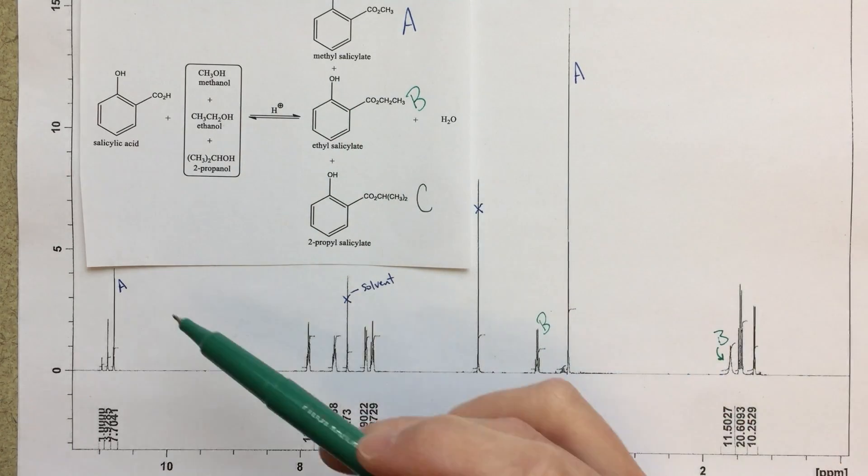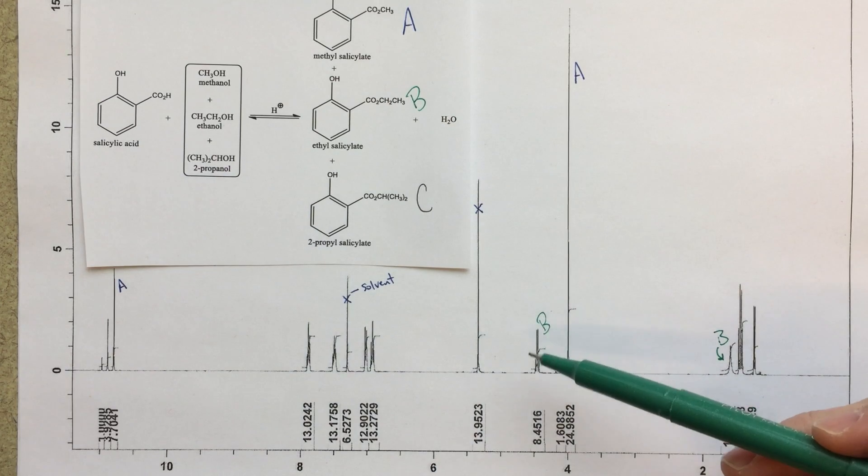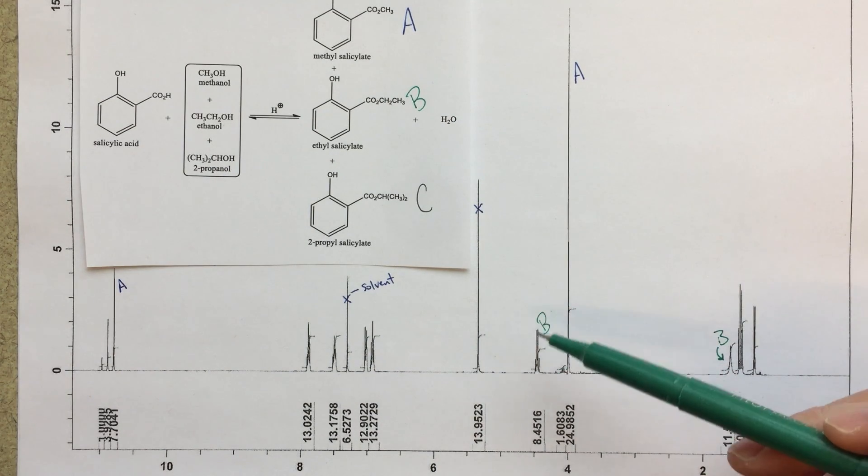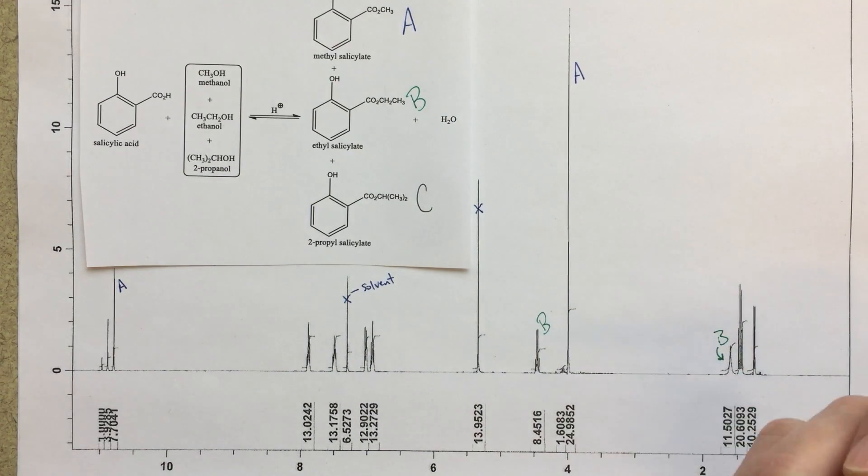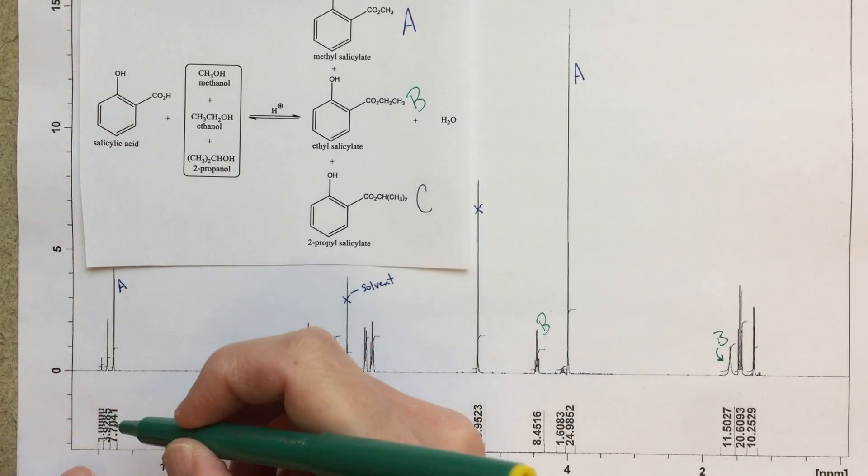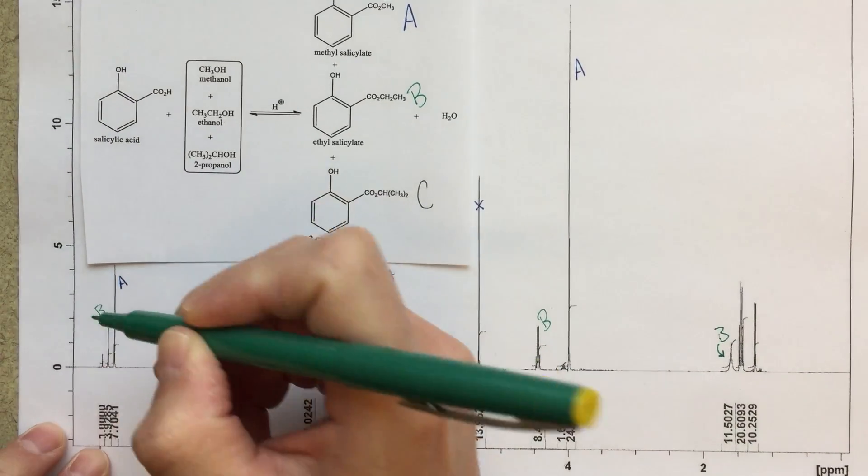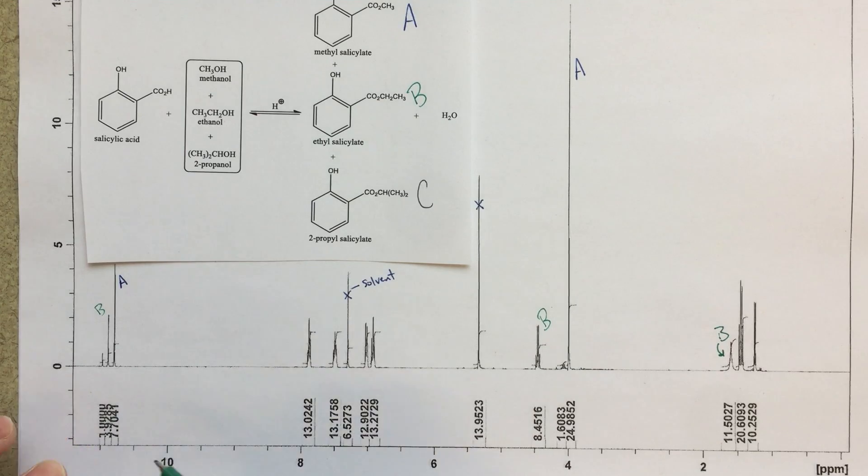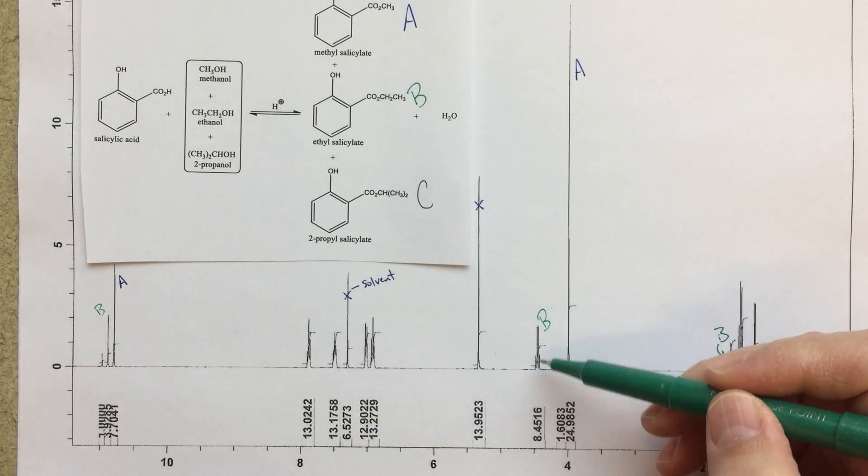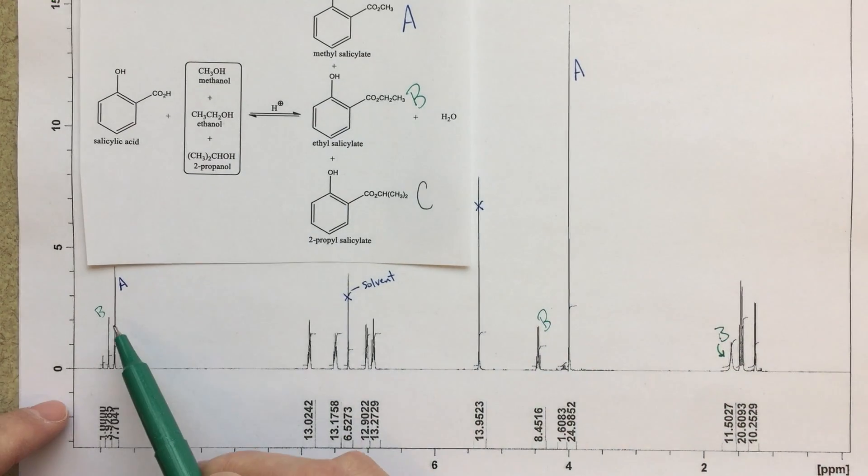So if I could find a peak out here that integrates to about half of this CH2 linker, that should identify that as B as well. So the one in the middle integrates to about four, so 3.9285, that's about four, double that, that should be eight, and we've got that peak here. So I think very clearly, again, this peak here should be our B peak.